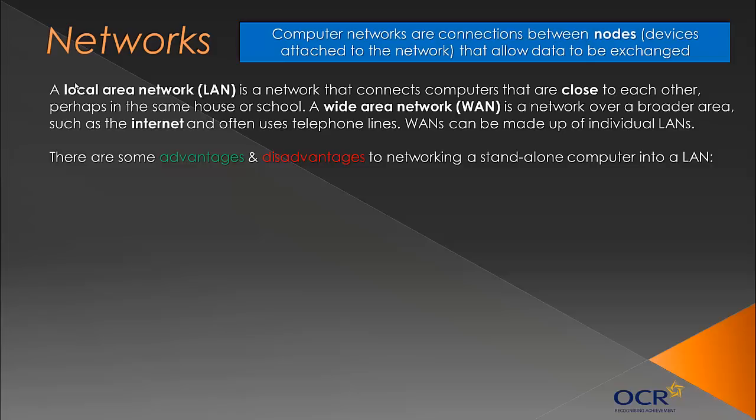The nodes in a LAN are close by, as opposed to a wide area network, or WAN, which covers a much broader area, such as the internet. WANs often utilise telephone lines, though that's slightly outdated as other media are now used. Importantly, WANs can be made up of individual LANs — the internet is lots of different LANs connected together.